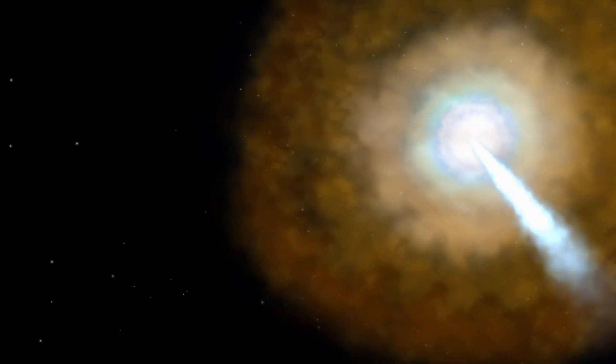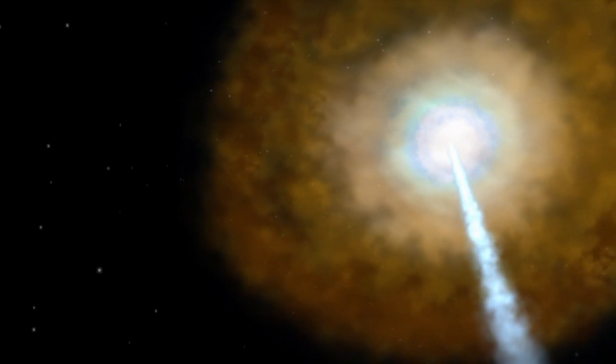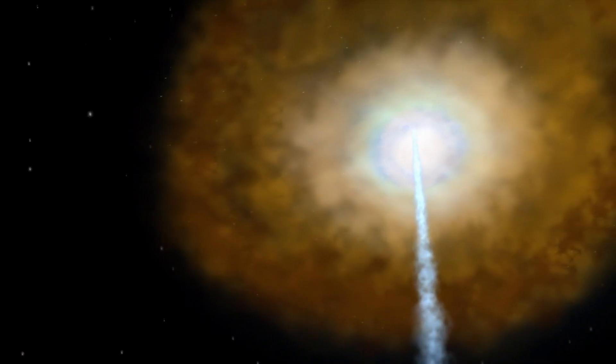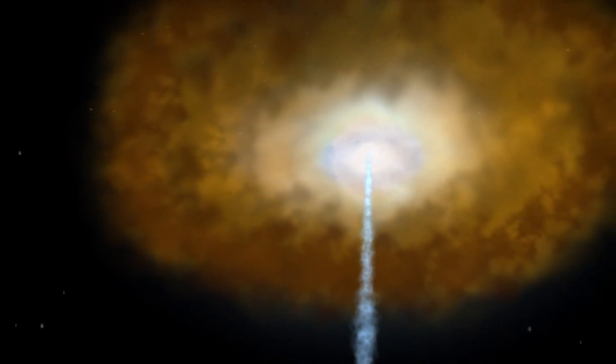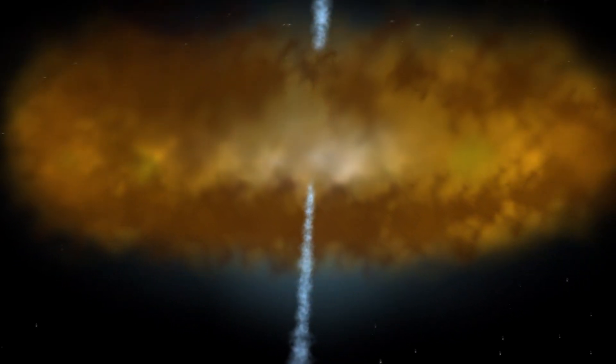What emission we detect from an active black hole is a function of how we see it, whether we're looking face-on and into one of its jets, or viewing it from the side through the disk of gas and dust that surrounds it.